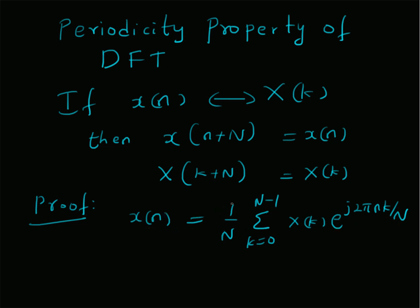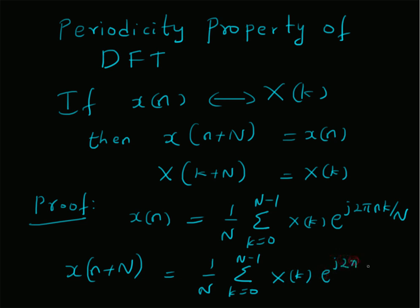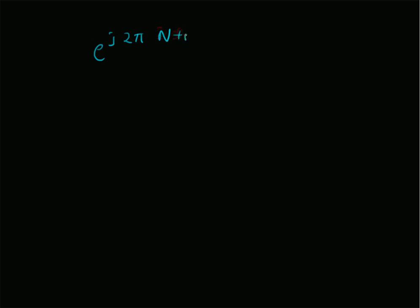So, given this definition, we will look at the expression for x of n plus N. That is, x of n plus capital N will be equal to 1 by N, summation k equal to 0 to N minus 1, X of k. And now, this n will be replaced by n plus capital N, that is, e power j 2 pi, n plus capital N, into k over capital N.